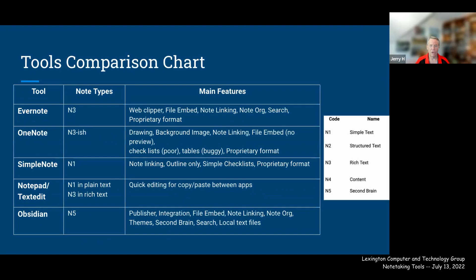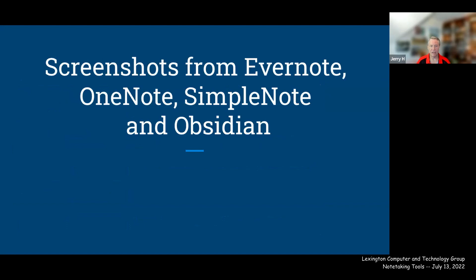Comparing the apps: Evernote and OneNote are at the rich text level. Evernote has the web clipper, good organization, search, and linking. OneNote has drawing and background images, but its tables are buggy and checklist support is poor — usable but clunky. SimpleNote is really like Notepad — no rich text, no embedded images, no tables. Not much better than plain text mode.